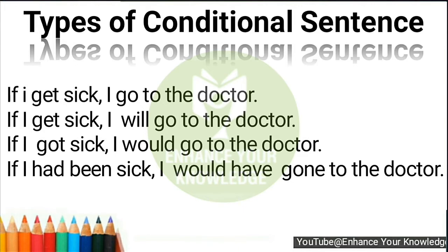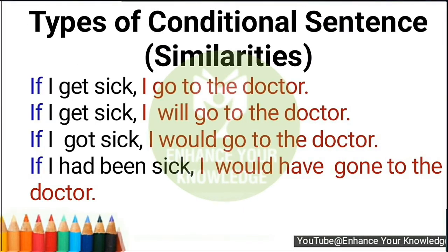Let's talk about what is the same or similar in all these sentences. Each sentence has two parts separated by a comma. There are two clauses in a conditional sentence and they all use the conjunction 'if.' Conjunctions are used to join two sentences or two clauses — their main function is to join two different ideas together in a single sentence. In all conditional sentences, we have an if-clause and a main clause. The if-clause is the dependent clause, while the main clause is the independent clause.